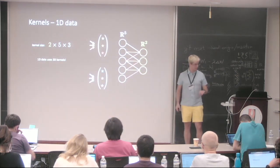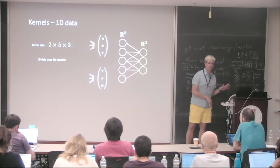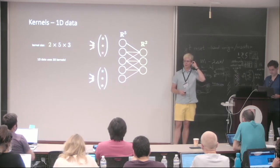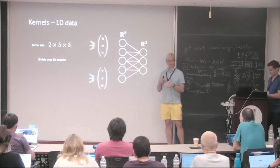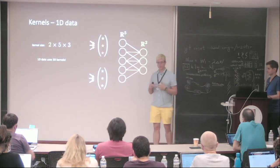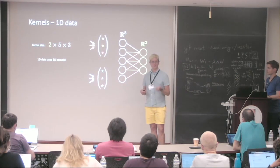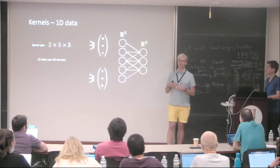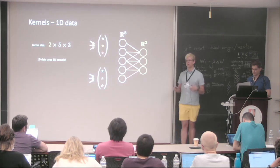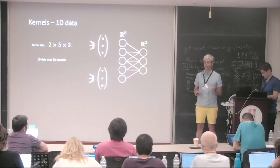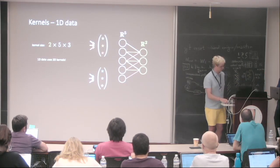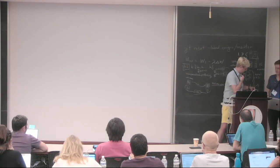Let's go back to the notebook example where we trained the convolutional net and the fully connected network. Both had the same number of parameters, but the convolutional network performed much better — because we exploited three specific properties of the data: locality, stationarity, and compositionality. What happens if those three assumptions are no longer valid? We're going to see that soon.